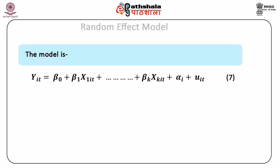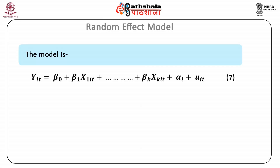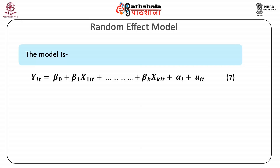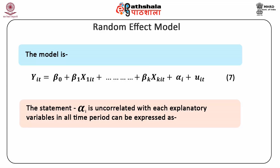In this equation, it is explicitly assumed that the unobserved effect α_i has zero mean, assuming no loss of generality. In the fixed effect model, we used within transformation to eliminate the unobserved effect α_i. But in the random effect model, α_i is uncorrelated with each explanatory variable in all time periods. Using within transformation to eliminate α_i in this case results in inefficient estimators. The condition that α_i is uncorrelated with each explanatory variable in all time periods can be expressed as: Cov(α_i, x_jit) = 0 for t = 1 to T and j = 1 to k.